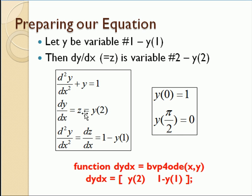So our first order equation is dy dx should be y of two. And then d squared y dx squared is dz dx. And d squared y dx squared from up here is one minus y, or one minus y of one. So our second first order equation is dz dx is one minus y of one. So we need a routine that provides these two first derivatives as a function of y of one and y of two.